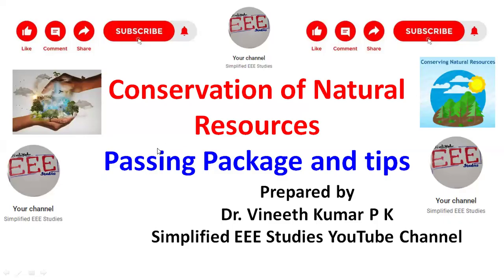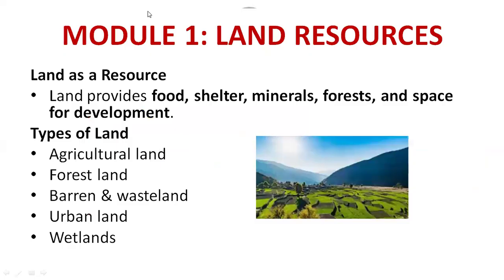Let's get started from Module 1 onwards. Module 1 is Land Resources. Land as a resource provides food, shelter, minerals, forest, and space for development. The different types of land are: agricultural land, forest land, barren land, wasteland, urban land, and wetlands. You may need to give a brief explanation regarding each point.